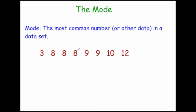So here we've got a set of numbers and let's find its mode. So we've got 3, 8, 8, 8, 9, 9, 10 and 12. You can clearly see that 8 happens 3 times, it occurs 3 times. So that means it's the most common number. So that means that the mode for this set of data is 8.